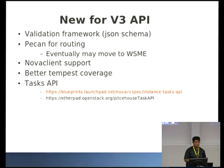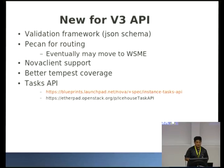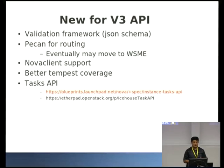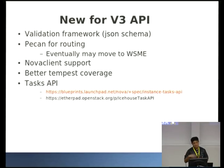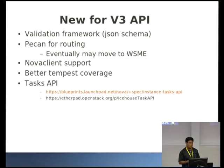We're adding Nova Client support for the V3 API and planning to do a lot better Tempest coverage. Currently we've got about the same Tempest coverage as the V2 API. Through i3 we'll be trying to add as much as we can. We're also looking at a tasks API — that's Andrew Lasky's project — basically so we can get better information on things like starting up or resizing a server, being able to get better information back about what's actually going on in the process and getting better messaging about why something failed.